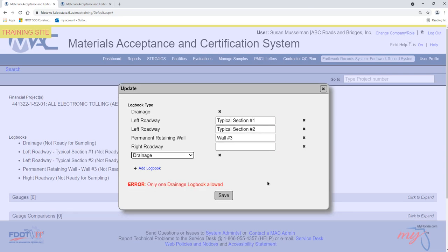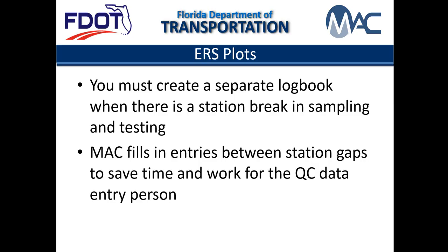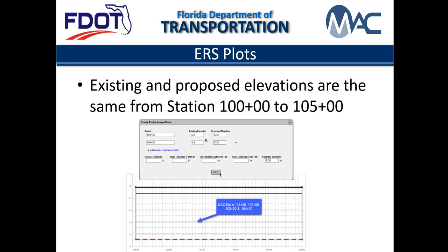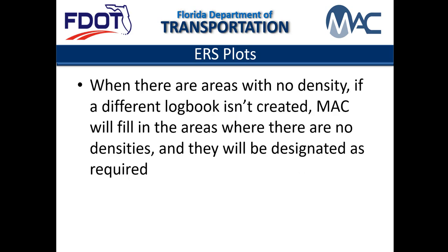You can have only one drainage logbook type per ERS project. A separate logbook must be created when there is a station break in the sampling and testing. This is because MAC fills in the entries between station gaps to make it easier for data entry to manually enter the elevations. For example, if the existing and proposed elevations are the same from station 100+00 to station 105+00, data entry only needs to enter the values for those two stations and MAC fills in the entries between them. This automation means that when there are no areas of density between stations, different logbooks must be created for each station range.